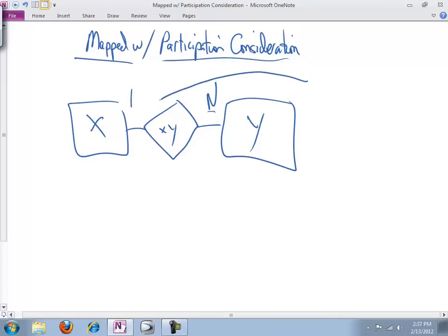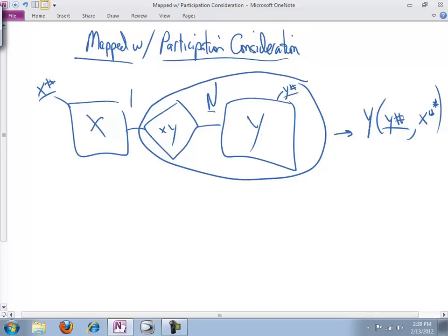We learned when we went through the mapped translation technique that we can do this. And have a table y with y number as the primary key and x number as the foreign key. So we take the primary key of the other entity participating in the relationship and bring it over into the table. Bring it over into the other table as a foreign key. And by so doing we are capturing the nature of the relationship in the y side table. And this is perfectly fine on the n side, it would not be okay on the one side we know. So there's the review of mapped.